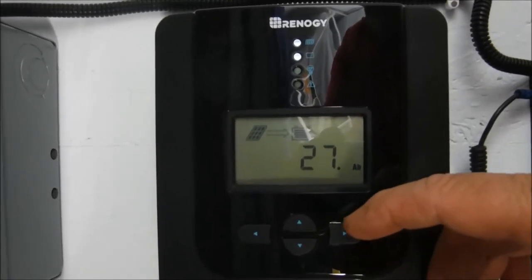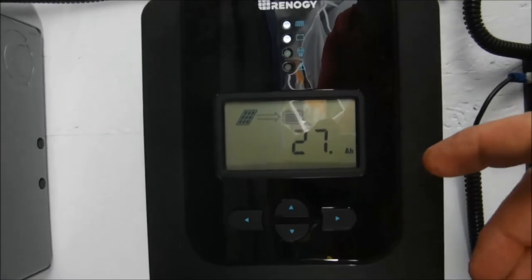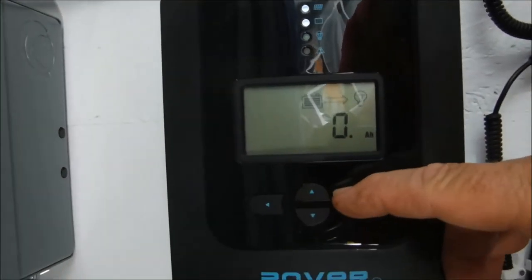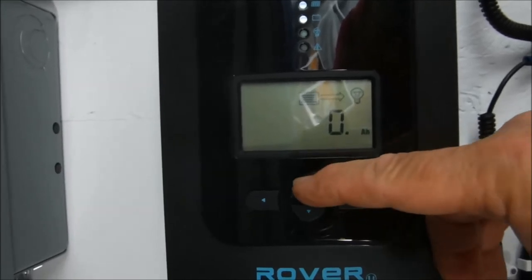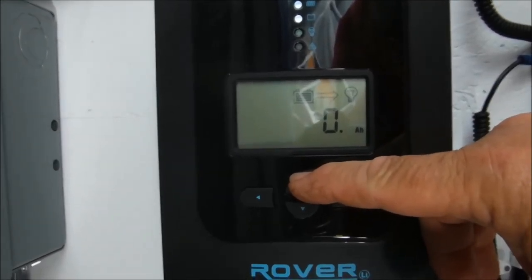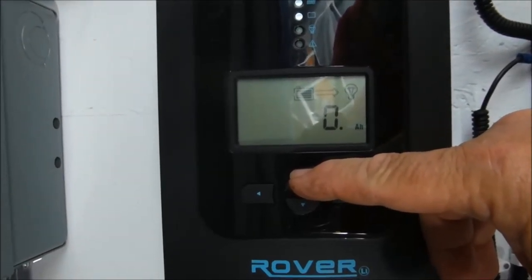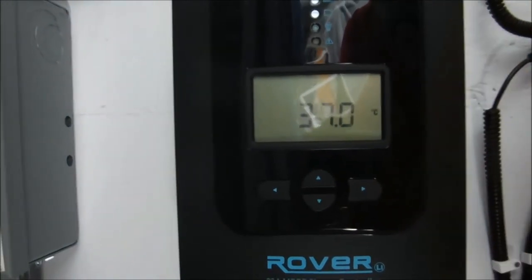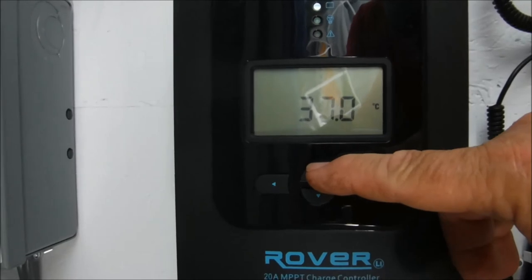I'm not sure where that number comes from or what it means. Certainly not the reserve of the batteries because at 100 percent charge it would be 200 amp hours. Still have lots to learn. Another amp hour number at zero. I guess that's the current output, zero current. Temperature is 37 degrees Celsius, pretty warm day.